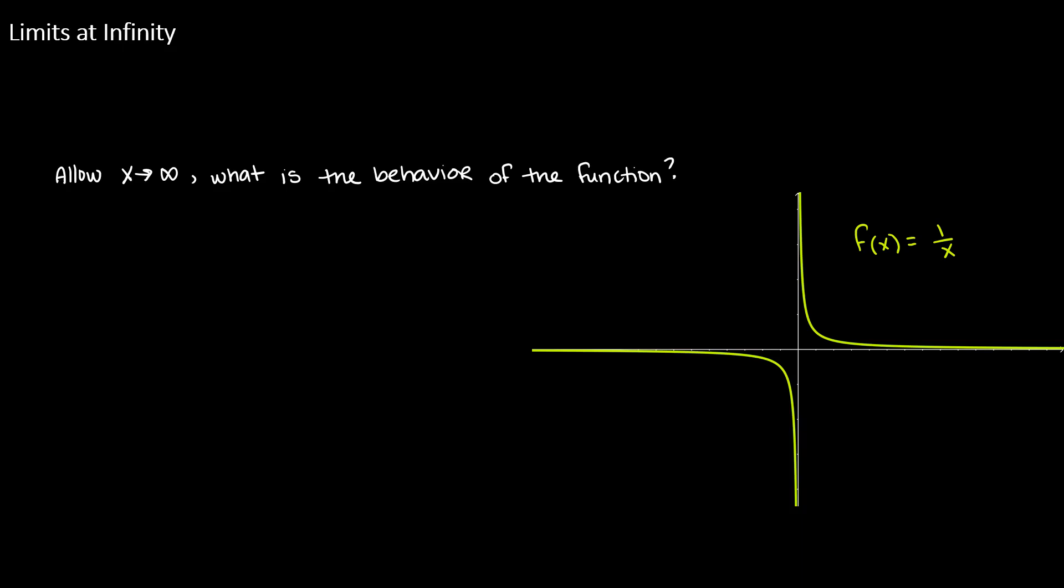Let's take a look at the function 1 over x. If we want to know what's the function behavior as we allow x to approach infinity, we can visualize it on the graph. Watching a point travel towards positive infinity, we see that we start off above the x-axis and we inch closer and closer to that x-axis as we travel further to the right. And we can ask about x traveling towards negative infinity and how that function behavior behaves. We see that we start below the x-axis and we inch closer and closer to the x-axis from below as we travel towards the left.